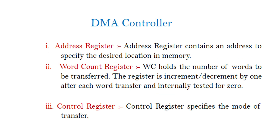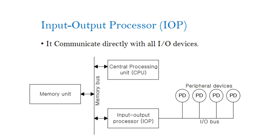The Address Register contains an address to specify the desired location in memory. The Word Count Register holds the number of words to be transferred; the register is incremented/decremented on each word transfer. The Control Register specifies the mode of transfer.